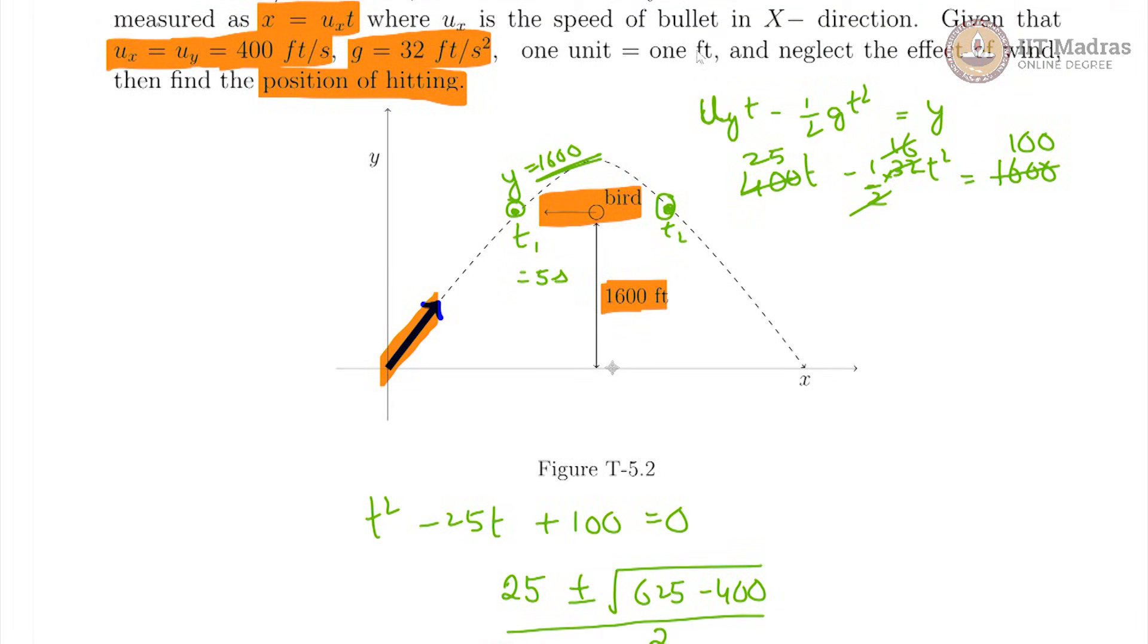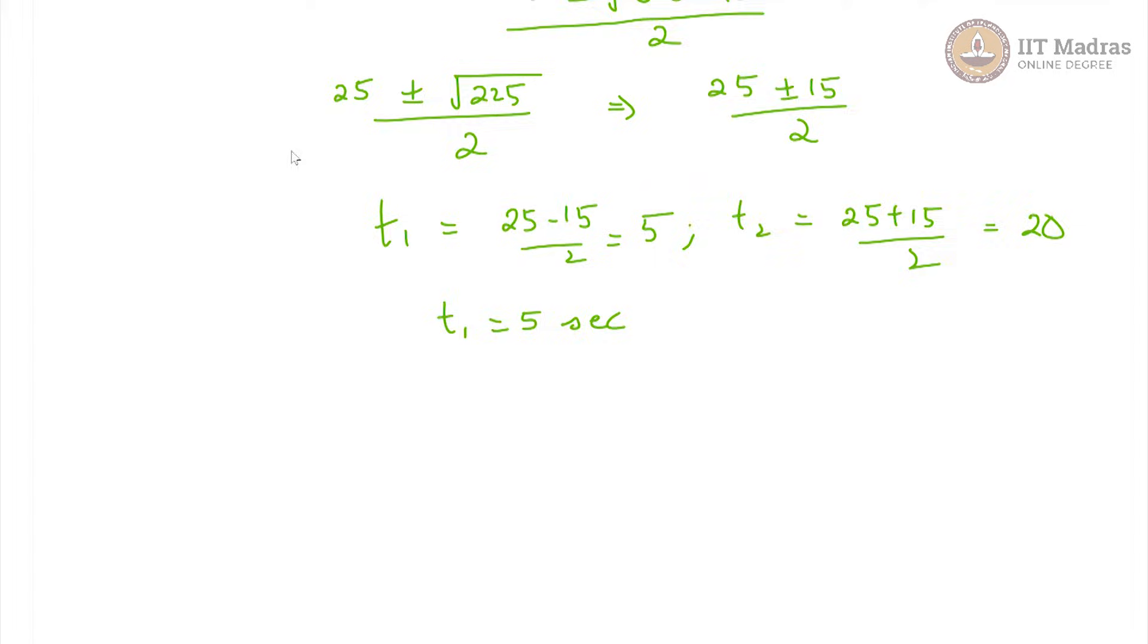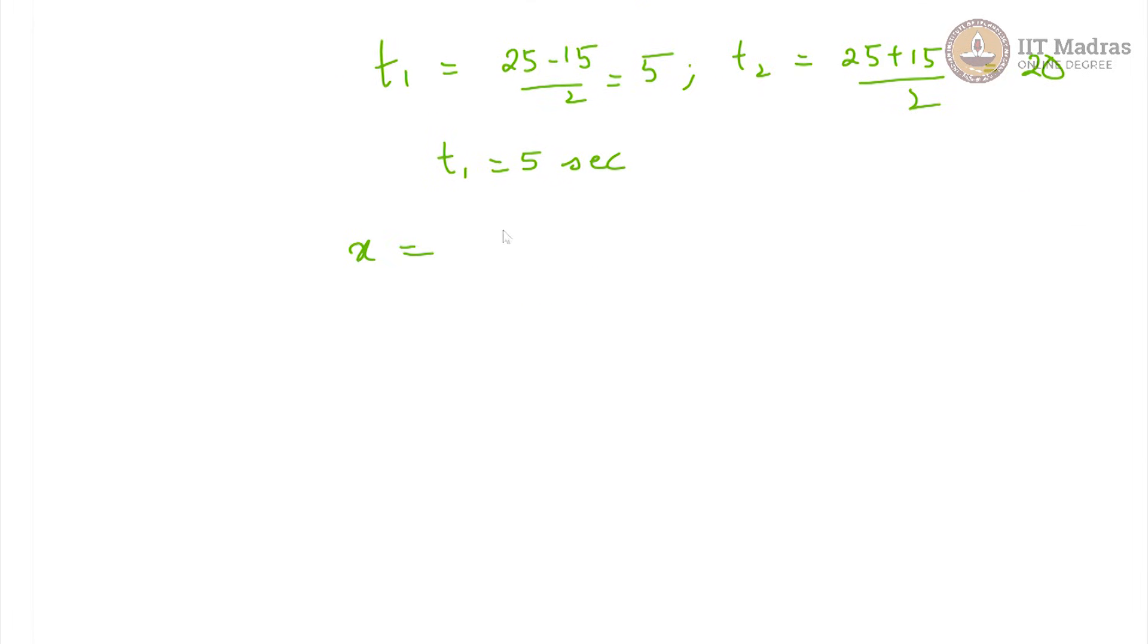For finding the position, what is left is to find the x coordinate which we will get from x equals u_x into t, where u_x is already given to be 400. So, x equals 400 into t1 which is 5, and that equals 2000 feet.